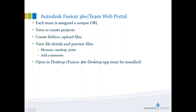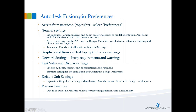We can view or create projects in folders, files, if we need to upload files. We can view files from the web and actually measure, markup, print. We can add comments to that, and this allows for some of that sharing even outside of the organization — allows us to give access to those members who may need to view what's going on. If we're going to open our files that we see from the team web portal, we must have that Fusion desktop app installed. Something to keep in mind.